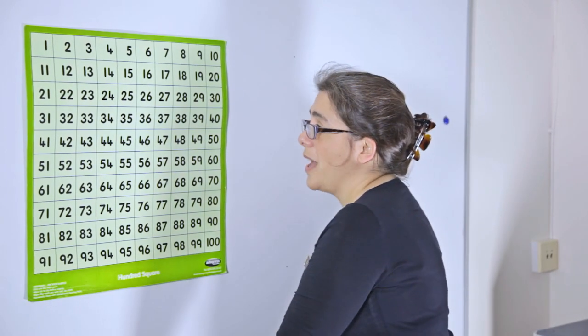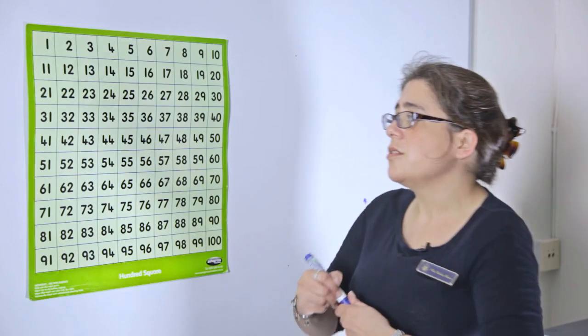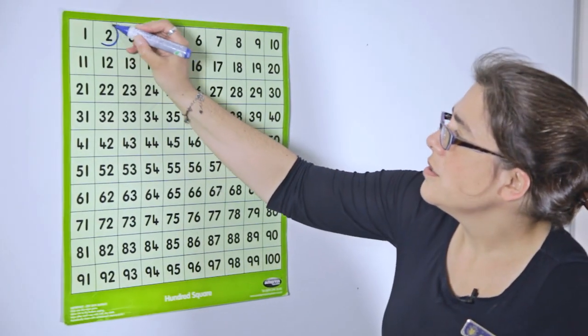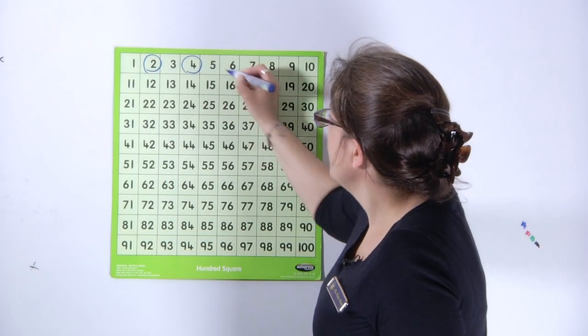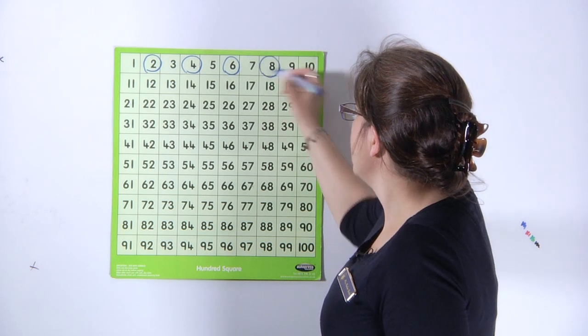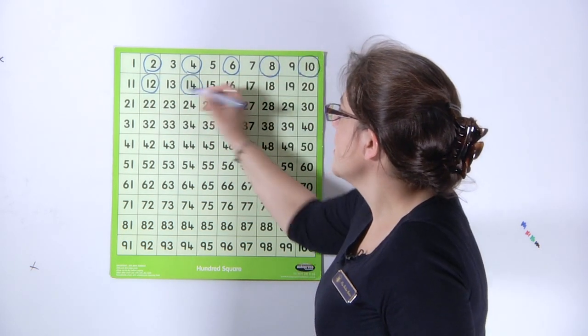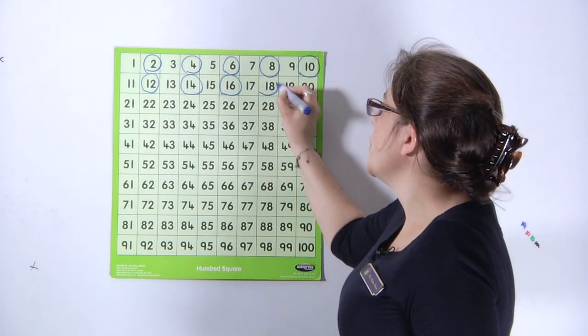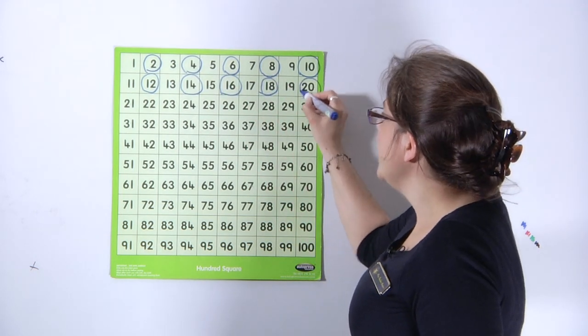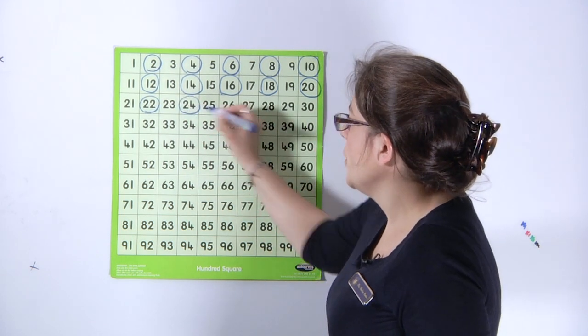We then start to look at how that pattern looks on a hundred square. Two, four, six, eight, ten. And the children start to learn other things about those numbers. For example, they are all even numbers when we're counting in steps of two.